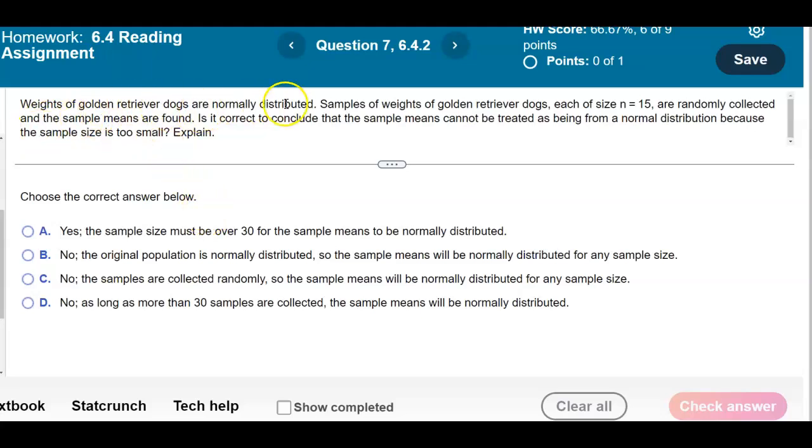Weights of golden retriever dogs are normally distributed. Samples of weights of golden retriever dogs, each of size n = 15, are randomly collected and the sample means are found. Is it correct to conclude that the sample means cannot be treated as being from a normal distribution because the sample size is too small? Explain.